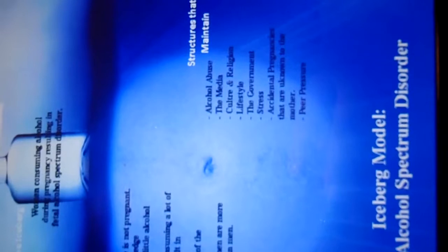Last we have structures that maintain. Structures that maintain function to perpetuate this problem. Structures for FASD include alcoholism, stress, abusive family, self-abortion, peer pressure, accidental,